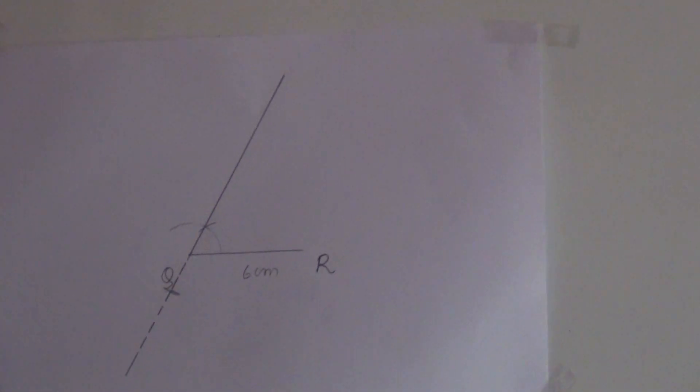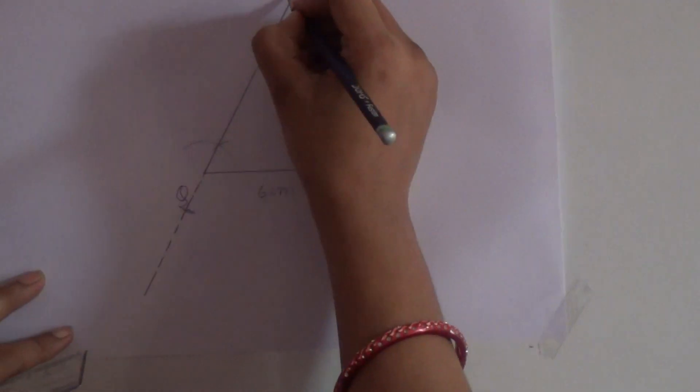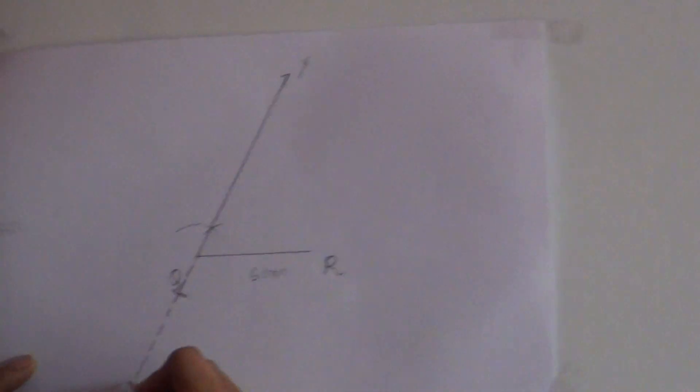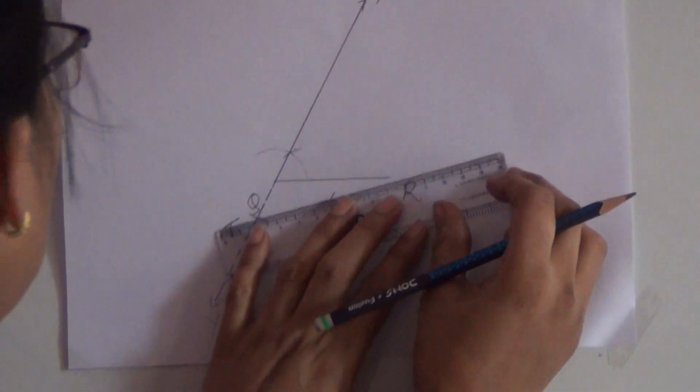Now we will join this by C. We have to name it as—earlier we have taken it as X, Y, and this is taken as PQR. We can take it as T. Now we join QR.